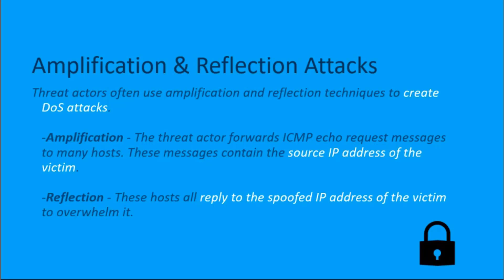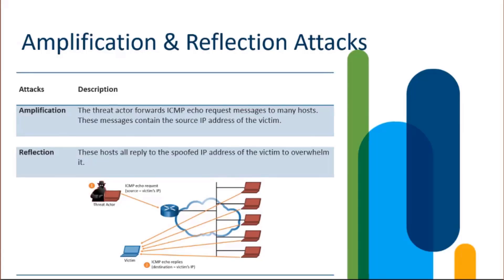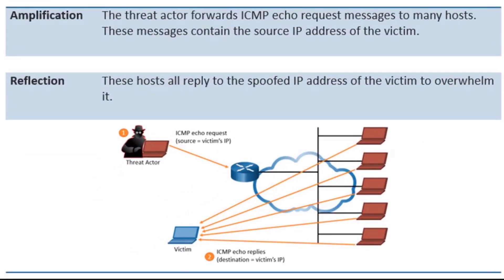The reflection is the second half of this attack, where all those hosts we messaged respond back to the source — that source being the poor victim with the spoofed IP address we put in our message. Our message could be a multicast or broadcast to a targeted group of machines, and that message includes the spoofed source IP. All those targeted hosts are then responding back with a destination IP of the spoofed address we had originated.